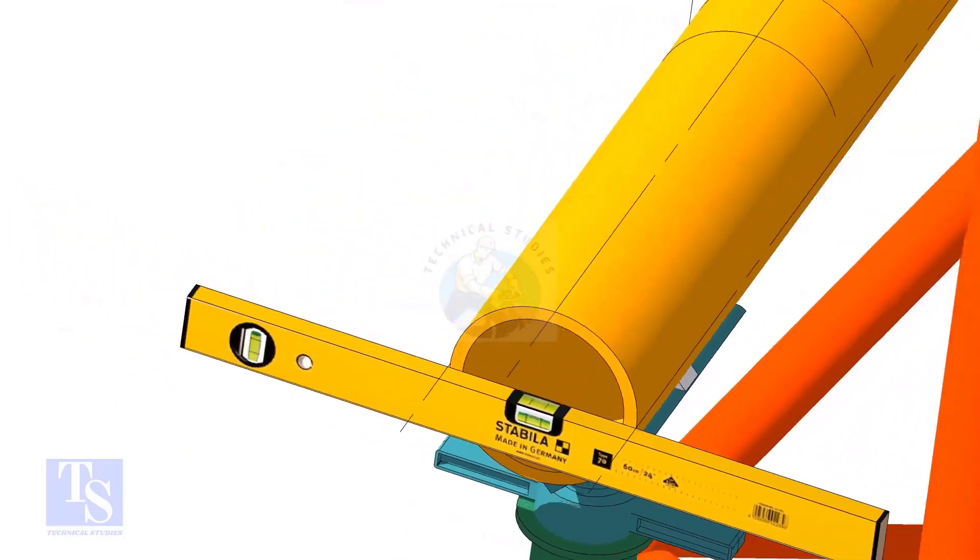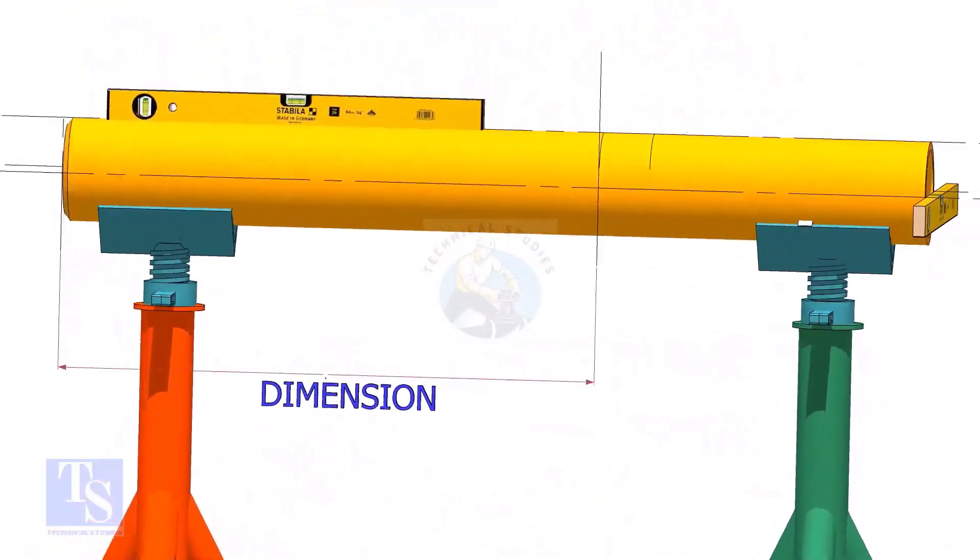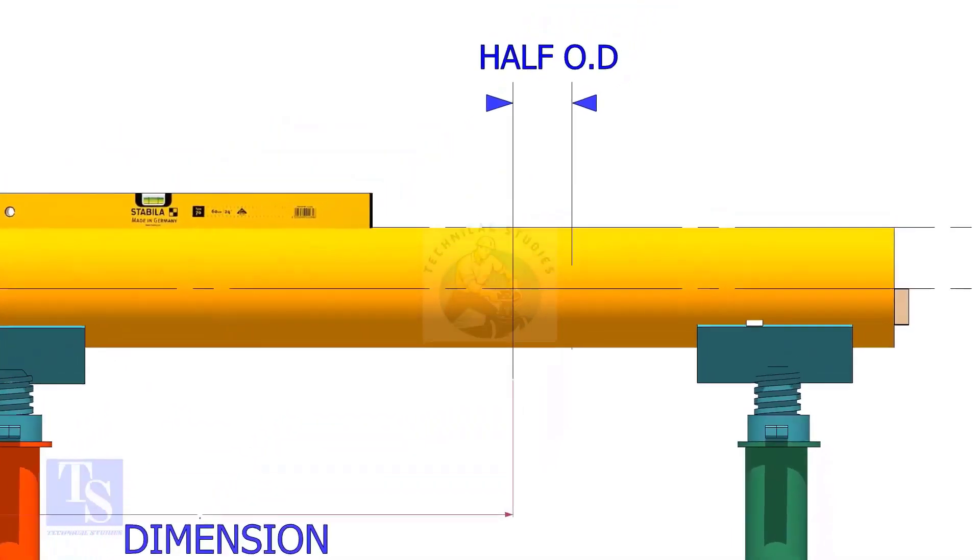Mark the center of the laterolette as per the drawing. Mark half OD of the header in the direction of the laterolette on the top of the pipe. This line is actually for inspection purposes only.